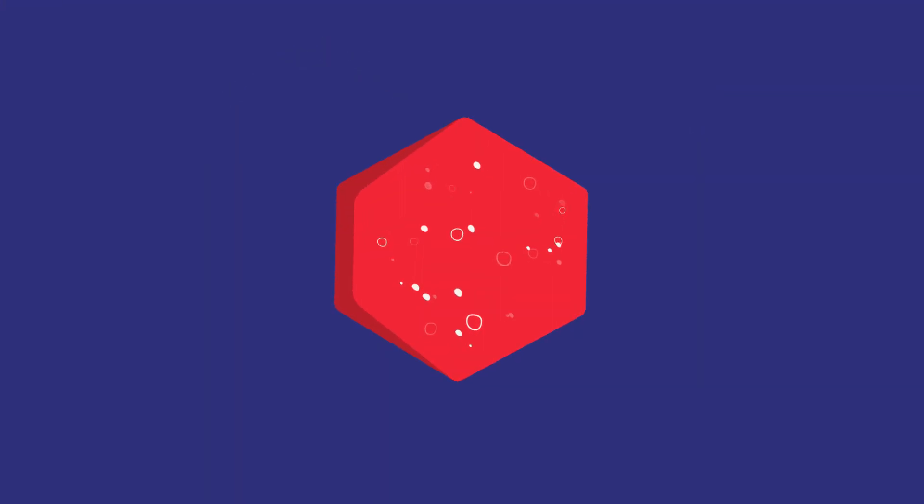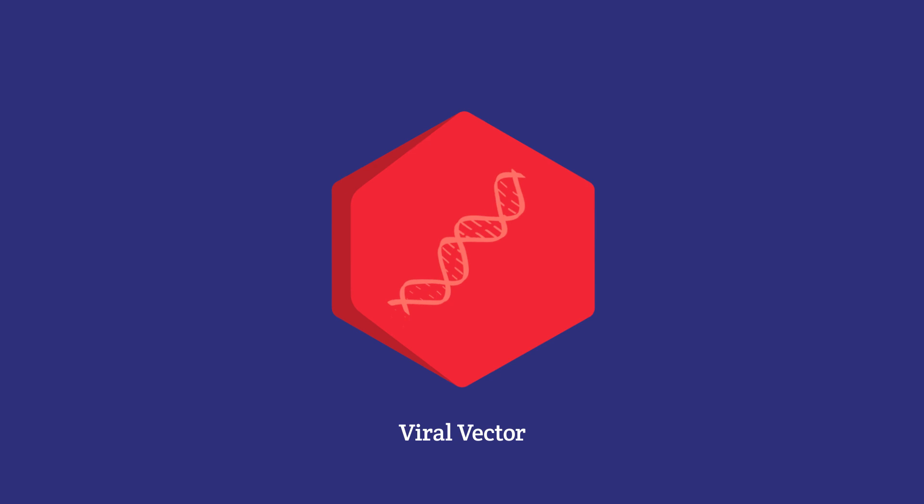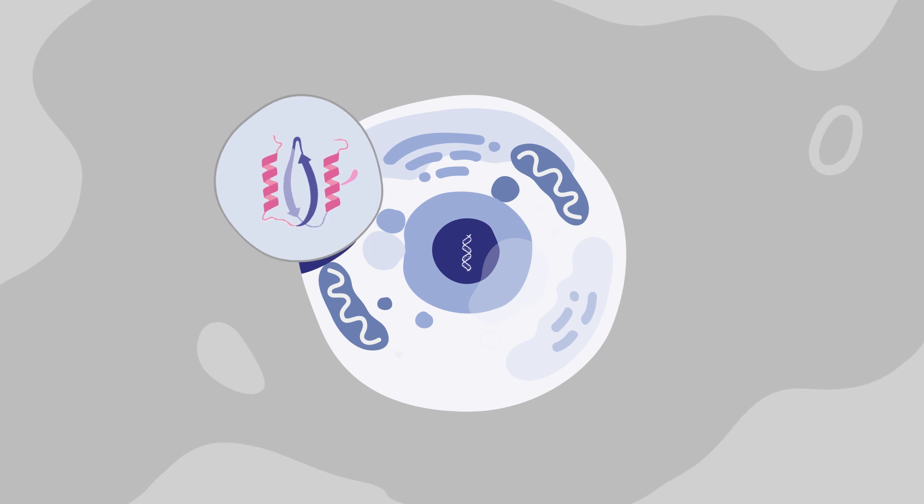Most gene therapy approaches typically work by delivering a working gene into a cell using a vector, which is a virus with all the viral genes removed. The vector enters the cell and provides it with instructions to either produce functioning proteins or to silence a faulty gene.